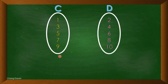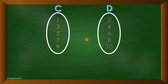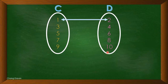Now let us have these two sets: set C and set D. In set C we have the numbers one, three, five, seven, nine — the odd numbers. In set D we have two, four, six, eight, ten — the even numbers. Each odd number corresponds to an even number.